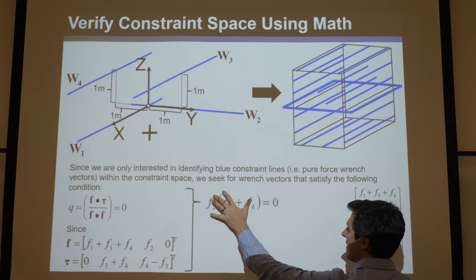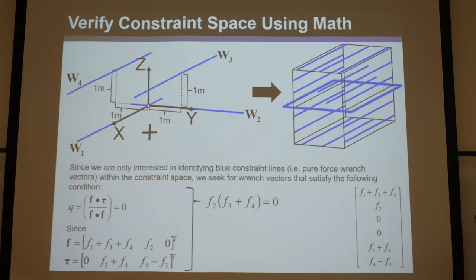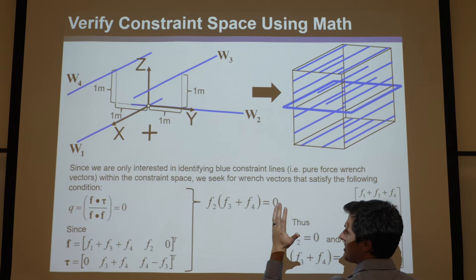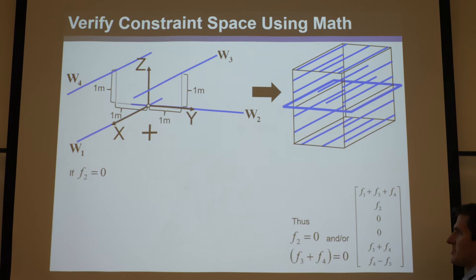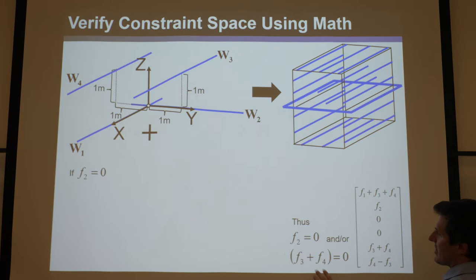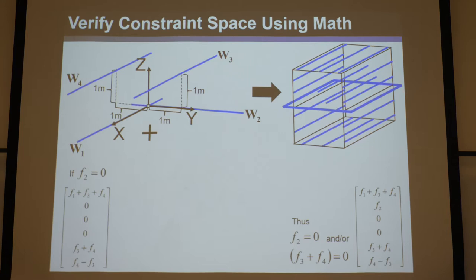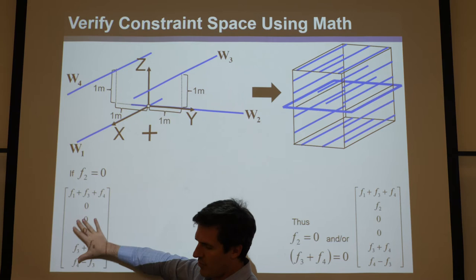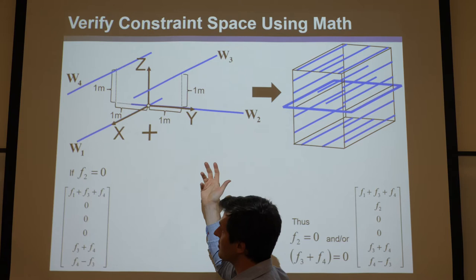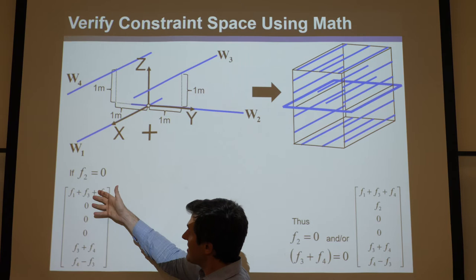Anytime this condition is met within this space, you will be able to find the visual spaces within the constraint space that are pure force wrench vectors. So let's look at the first condition: this could be zero if F2 is just zero, or if F3 plus F4 is zero. Those are two conditions we can make. Let's look at the first condition — if F2 is zero, the space turns into this, because F2 goes to zero. Here's the full constraint space for when F2 is zero, which guarantees it will be some space filled with only pure force blue wrenches.